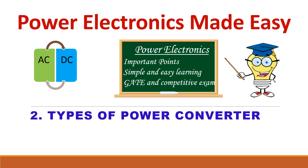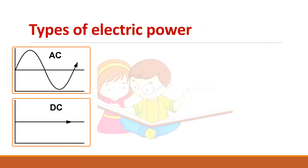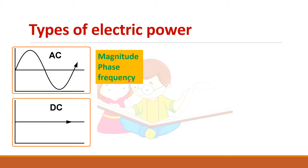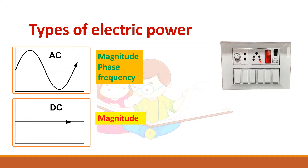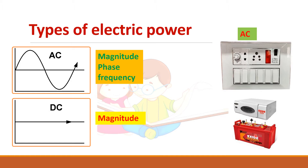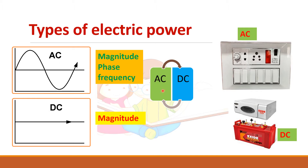There are two types of electric power: AC and DC. Alternating current is defined by its magnitude, phase, and frequency, while direct current is represented by magnitude only, as frequency is zero. A plug point will give you AC current, whereas a battery will give you DC current. AC can be converted into DC, and DC can be converted back into AC.